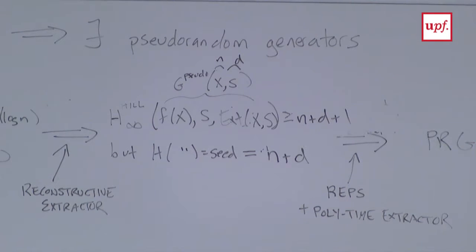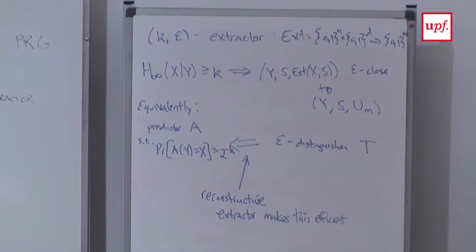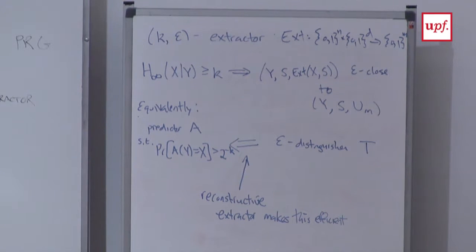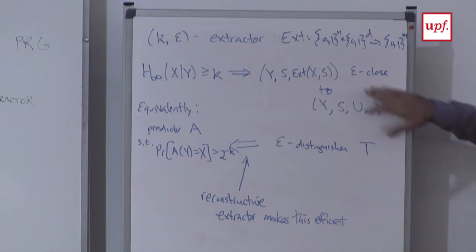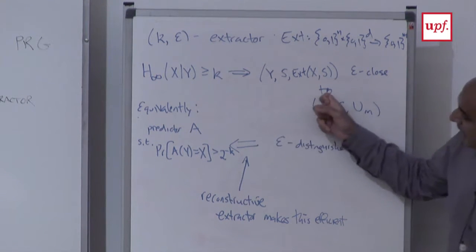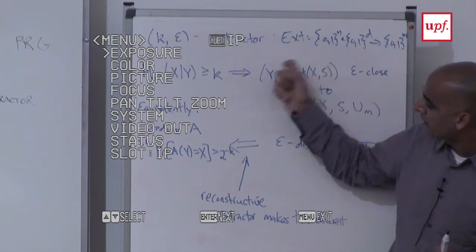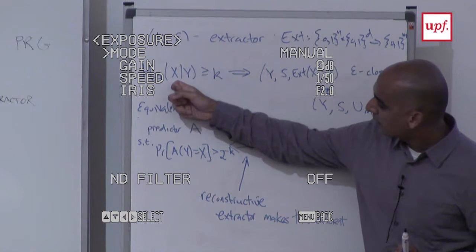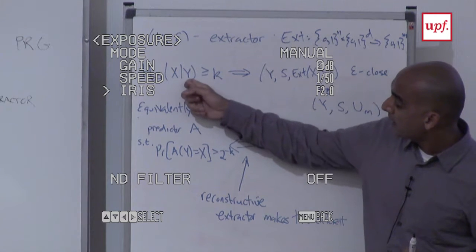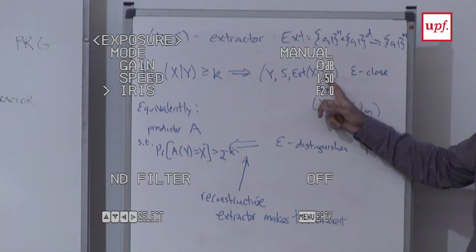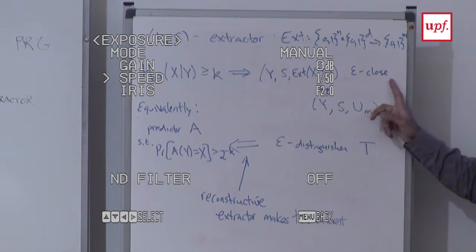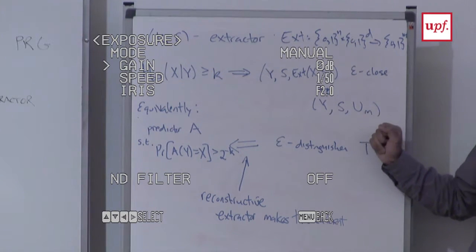From conversations at dinner last night I thought it's worth stepping back from the technical details of reconstructive extractors and just at an intuitive level asking: what is a reconstructive extractor giving you? Let's step back to what an ordinary extractor is. The definition of a k-epsilon extractor takes a source and a seed and gives output. If I have a random variable with min-entropy at least k, possibly given some other random variable y, then the output of the extractor applied to x should be close in statistical distance to uniform given y and the seed.